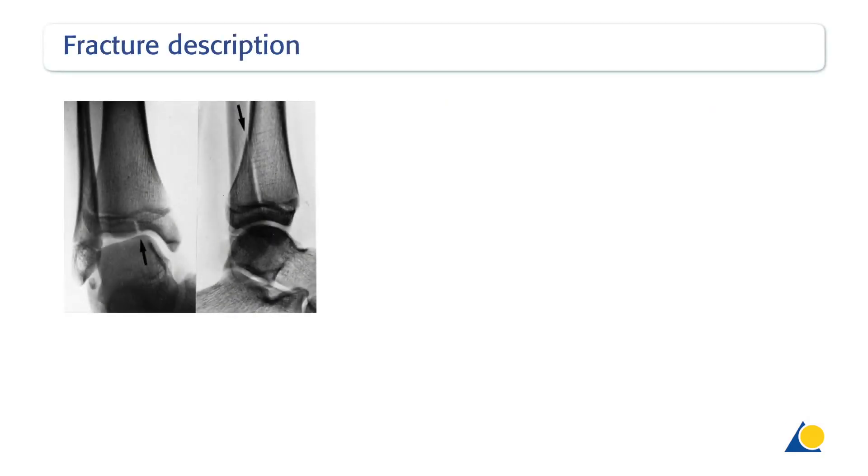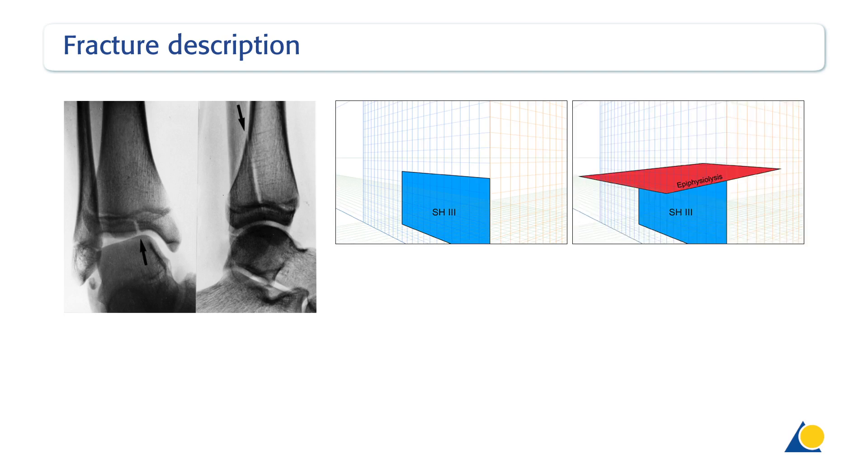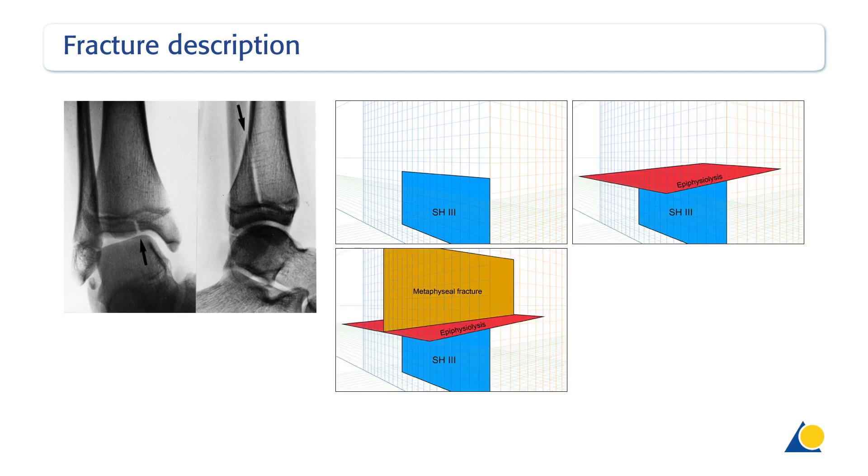The fracture lines occur in three planes: sagittal, axial and coronal. In the sagittal plane, the fracture line occurs within the epiphysis and extends into the joint, for example, Salter-Harris type 3 fracture.